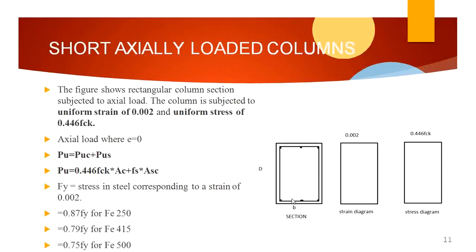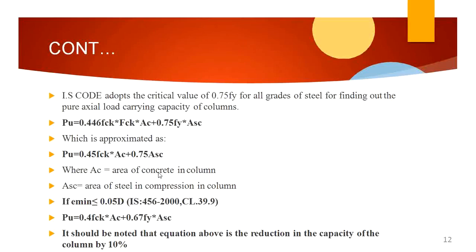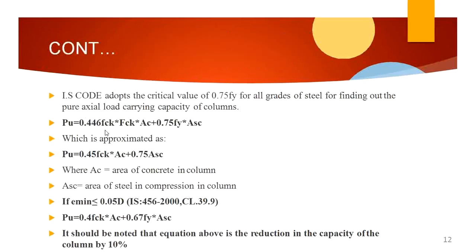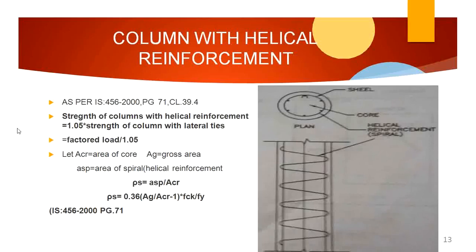The formula for design of a column: PU = 0.4·fck·Ac + 0.67·fy·Asc, as per IS-456 page 71. For helical reinforcement in circular columns, the result from the standard formula must be multiplied by 1.05 times the strength of the column with lateral ties, because if the circular column has helical ties, the strength will be increased.